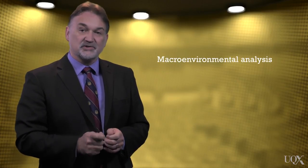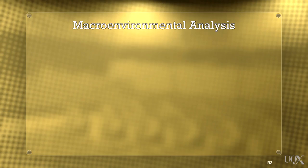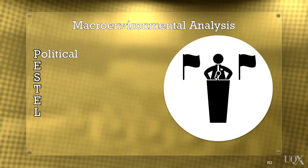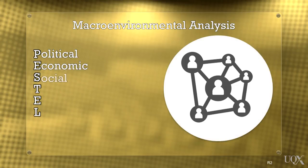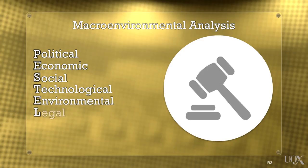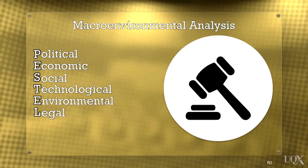Viljoen and Dan break this analysis into two components: the macro-environmental analysis and the industry analysis. The macro-environmental analysis can be summarised by the acronym PESTLE — political, economic, social, technological, environmental and legal. Obviously, many of these categories overlap. However, it is helpful to understand the kinds of issues that comprise PESTLE.